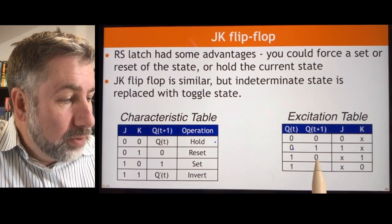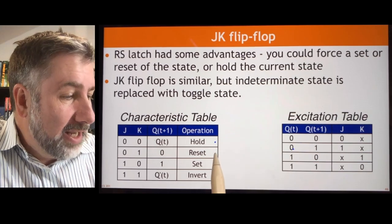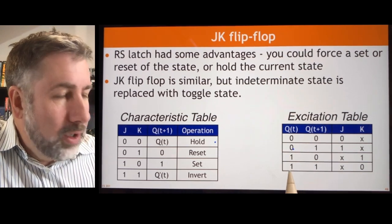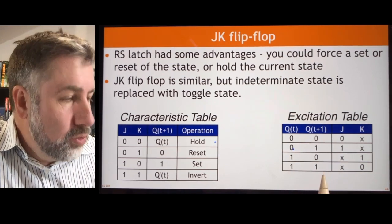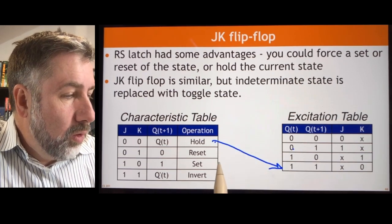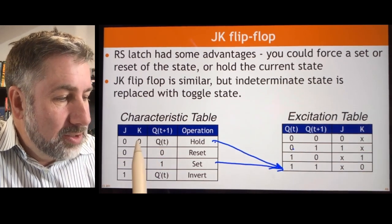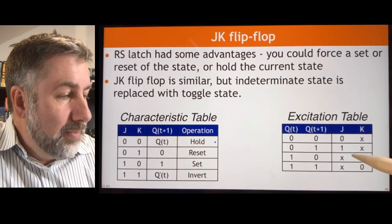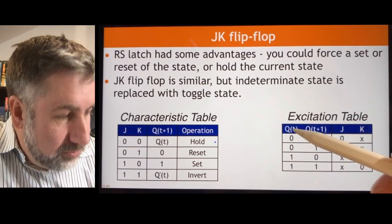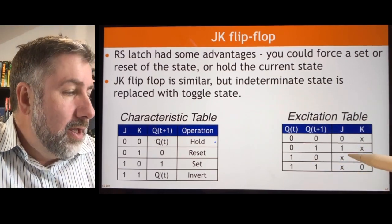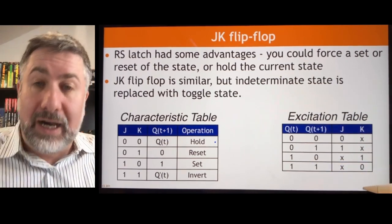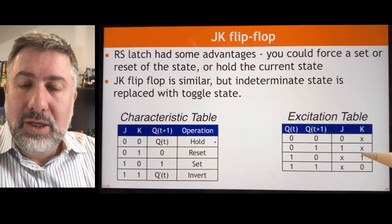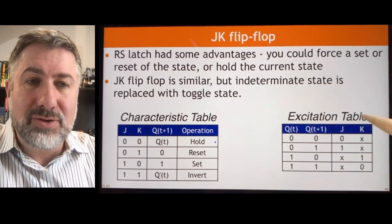If I'm in state 1 and I want to go to state 0, two options: I can either reset or invert. And if I'm in state 1 and I want the next state to also be 1, I can hold or set — K has to be 0 but J doesn't matter. So there are four possibilities in the excitation table, and these are the inputs you provide to make those transitions happen. As we do the sequential design process, these don't cares are going to be very useful.